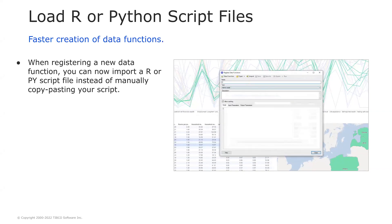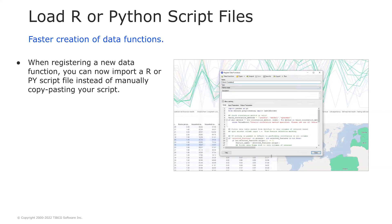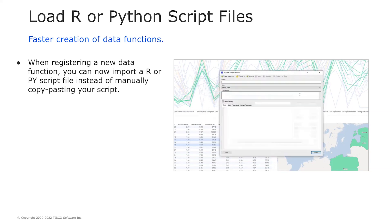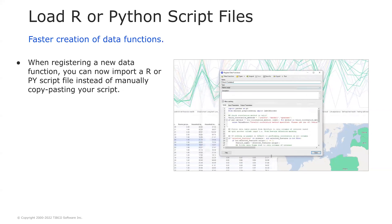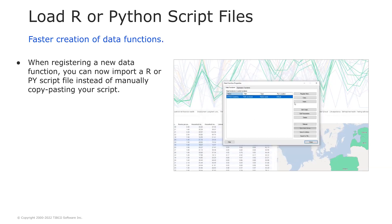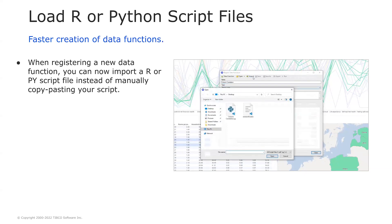In Spotfire 11.8, we have new features and enhancements for data functions. First, the ability to load an R or Python script file when creating a new data function. You can write your script in external tools in your preferred IDE, like Visual Studio Code, R Studio, Jupyter, and others. Save this script as a file and just import it when registering a new data function in Spotfire — no more copy-pasting the script, which may be prone to errors. Now you just load the file and then set the input and output parameters.